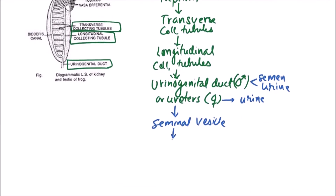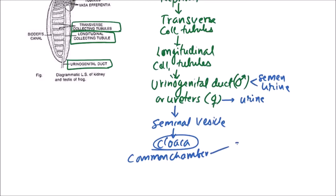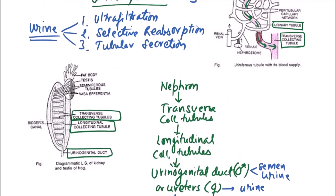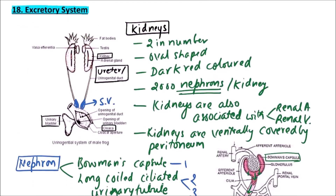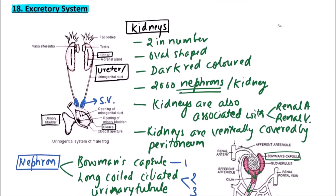Then the urine enters the cloaca, which is a common chamber for sperms, urine, and fecal matter. This concludes the excretory system of the frog.